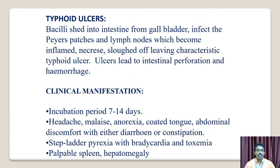Typhoid ulceration. Bacilli seeded into the intestines from the gallbladder infect Peyer's patches and lymph nodules, which become inflamed with necrosis, leading to sloughing, leaving characteristic typhoid ulcers. The ulcers lead to intestinal perforation and hemorrhage. Clinical manifestations: incubation period is 7 to 14 days. Symptoms include headache, malaise, anorexia, coated tongue, abdominal discomfort with either diarrhea or constipation, stepwise rising fever, toxemia, bowel distension, splenomegaly, and hepatosplenomegaly.